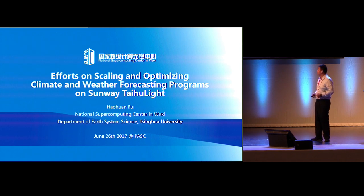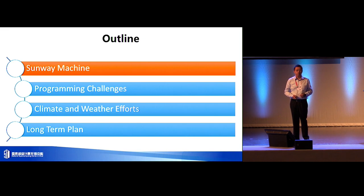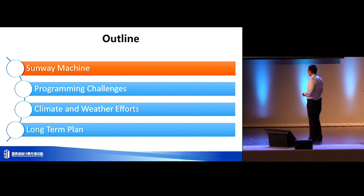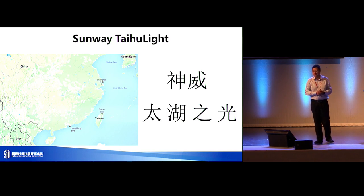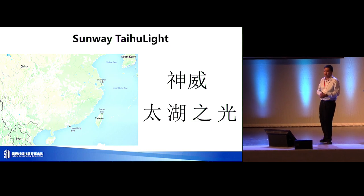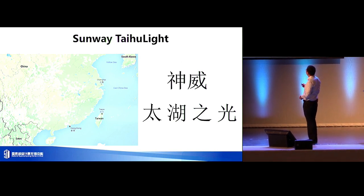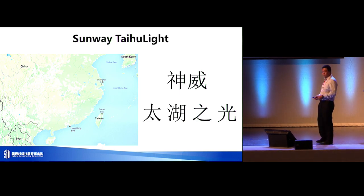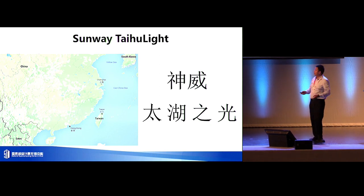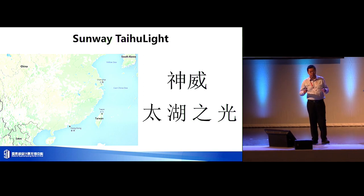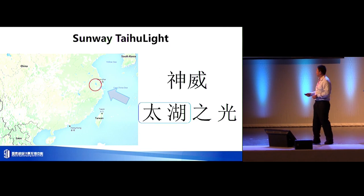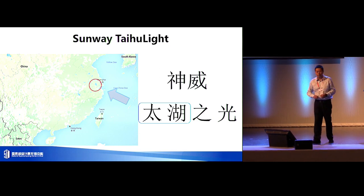First, I want to spend a few minutes to introduce the machine. I guess many of you already know the major features, but I'd like to go through some of the best parts. So first, the lake — the lake is very important. I was so excited to learn that you can actually swim in all the lakes in Switzerland, very different from China. This is actually the name of our computer: Sunway, which in Chinese literally means 'the power of the God.' And the name of the exact machine is Taihu Light — Taihu referring to these two characters that literally mean 'super large lake' in Chinese. It's roughly the same size as the city of Shanghai.